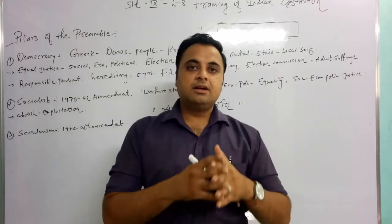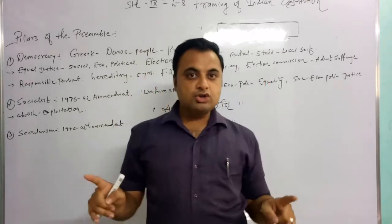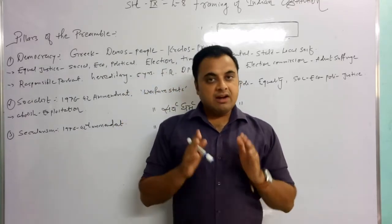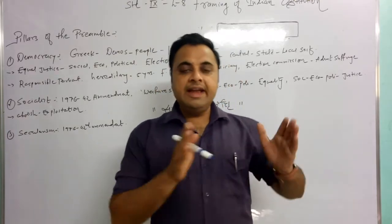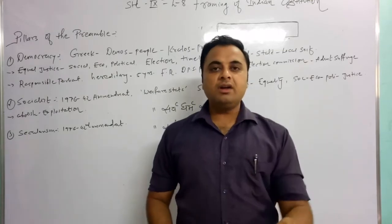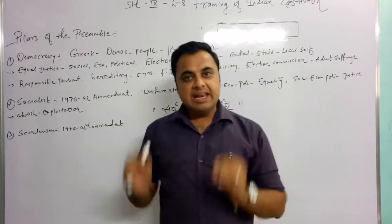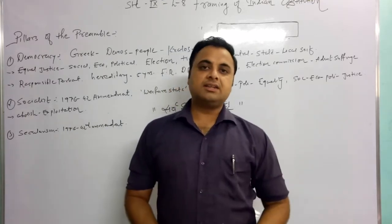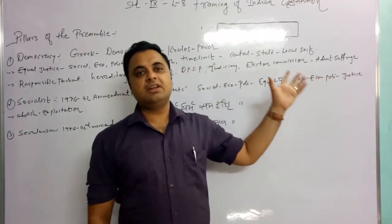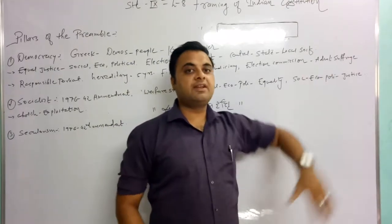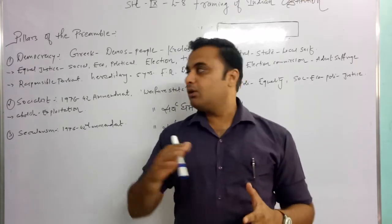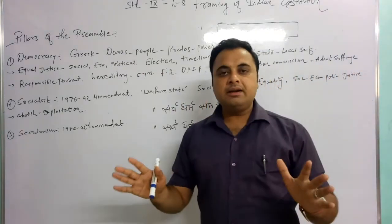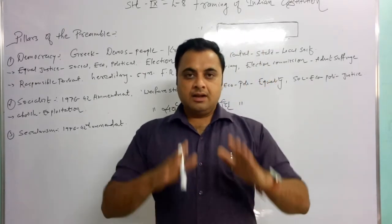These three elections are conducted by the Election Commission. There is a separate election commission at both the state level and central level. Adult suffrage means that citizens aged 18 and above can cast their vote without any discrimination of caste, creed, language, region, or religion. Every citizen above 18 years can cast their vote in any election in our country. That is the adult suffrage feature of our democracy.